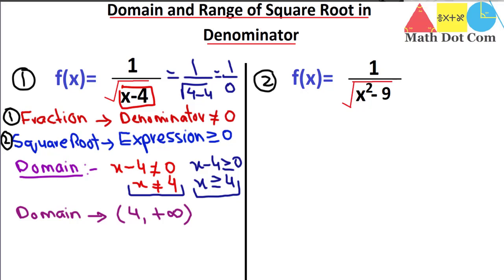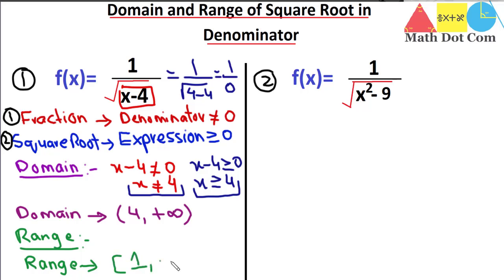Now let's find the range. The range depends on the domain values. If we put x = 5: 1 divided by √(5−4) = 1 divided by √1 = 1. We can never get zero from this function. So the range will be from 1 to +∞, and one is included, so we use a square bracket: [1, +∞).